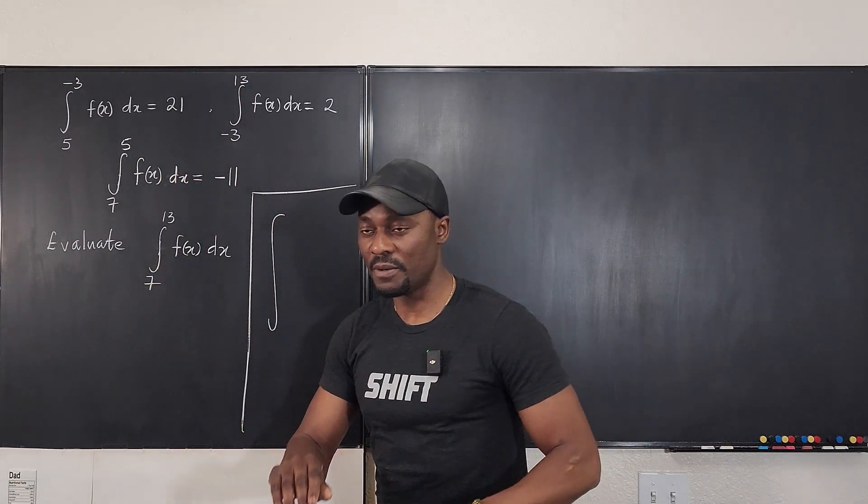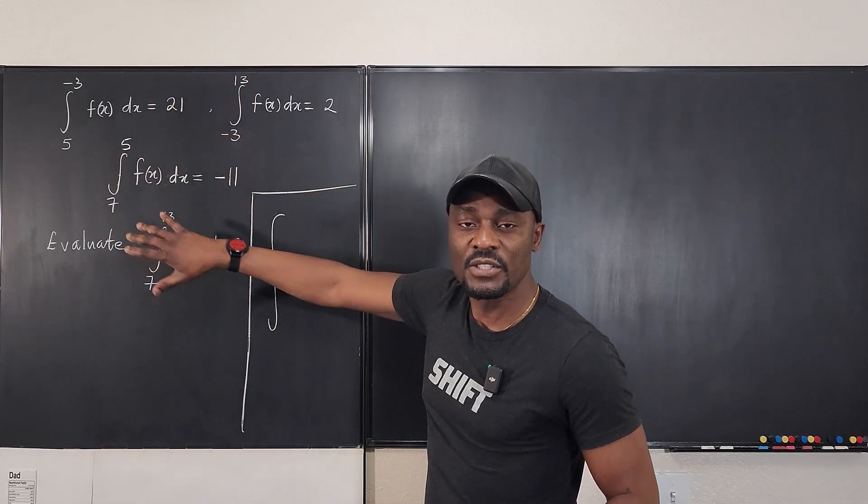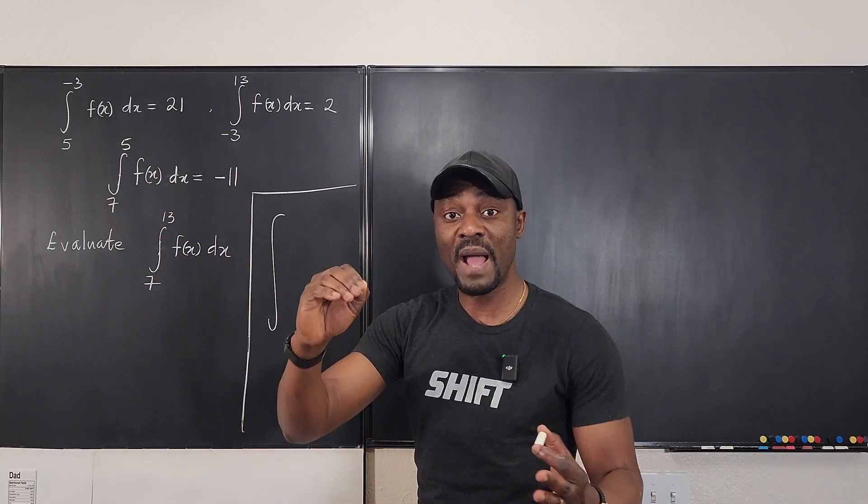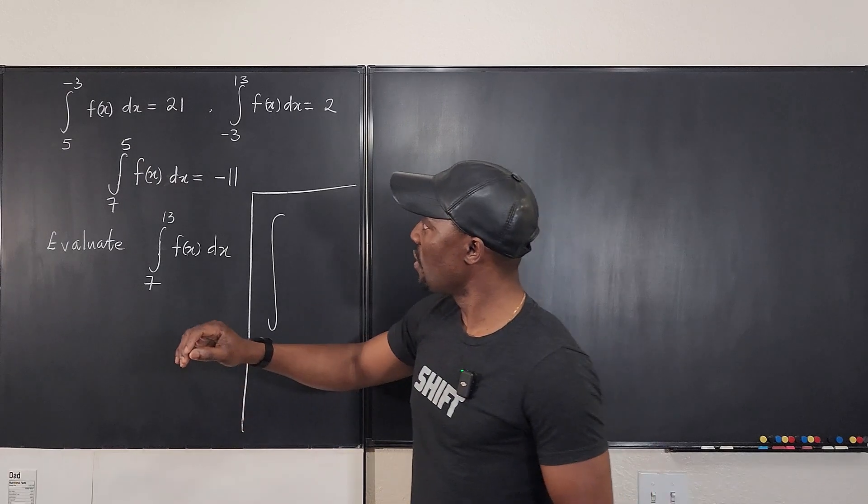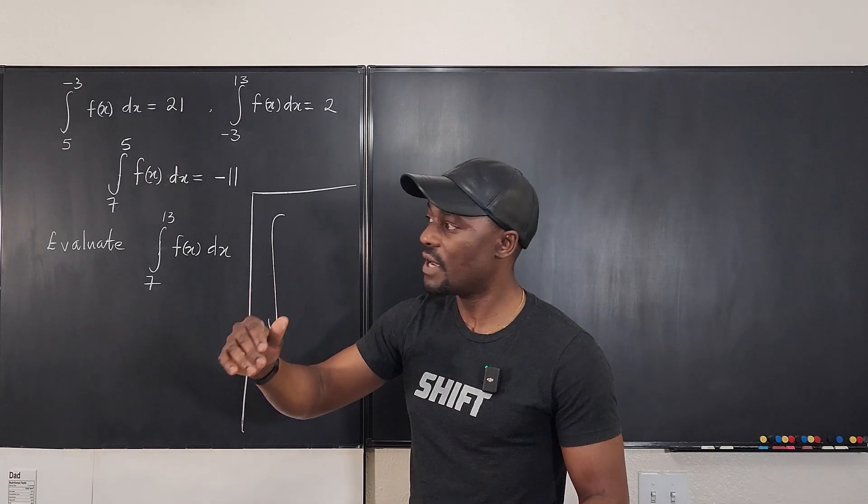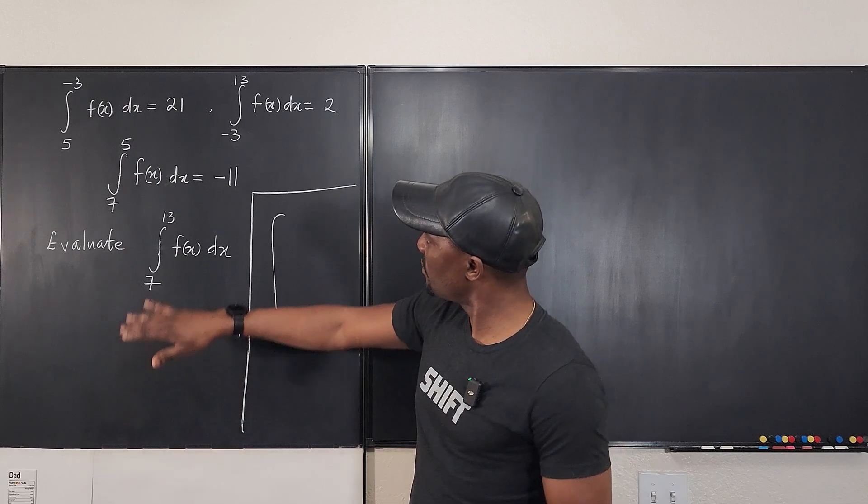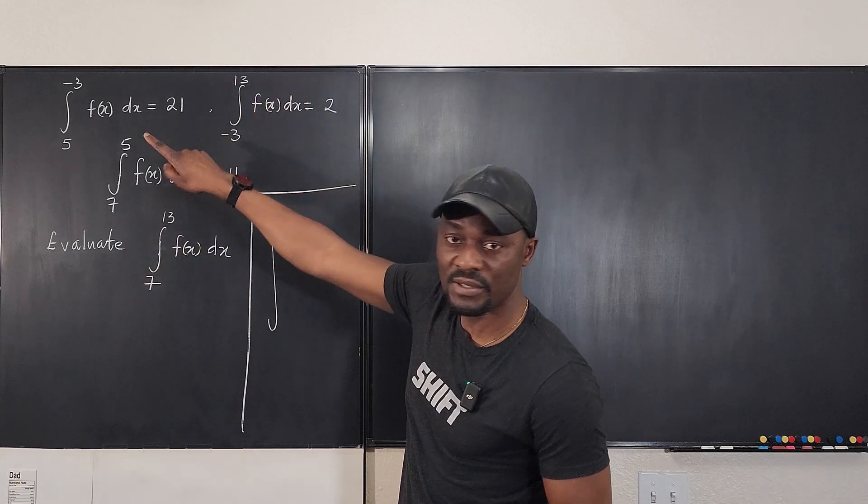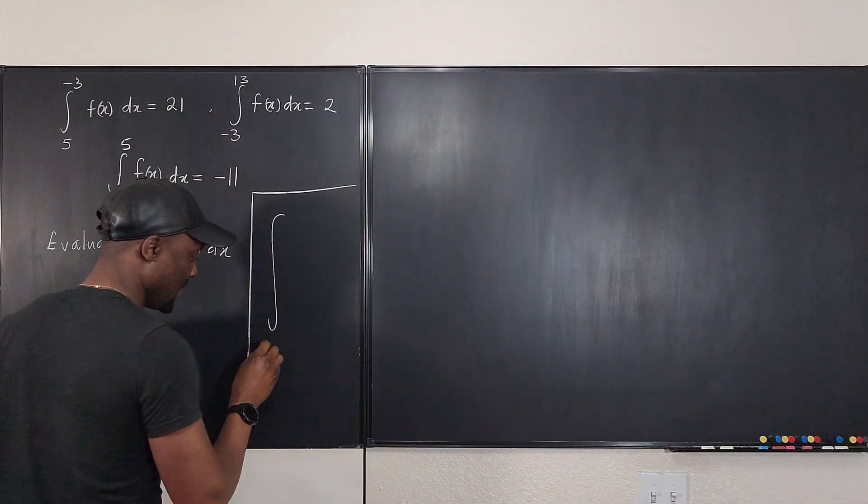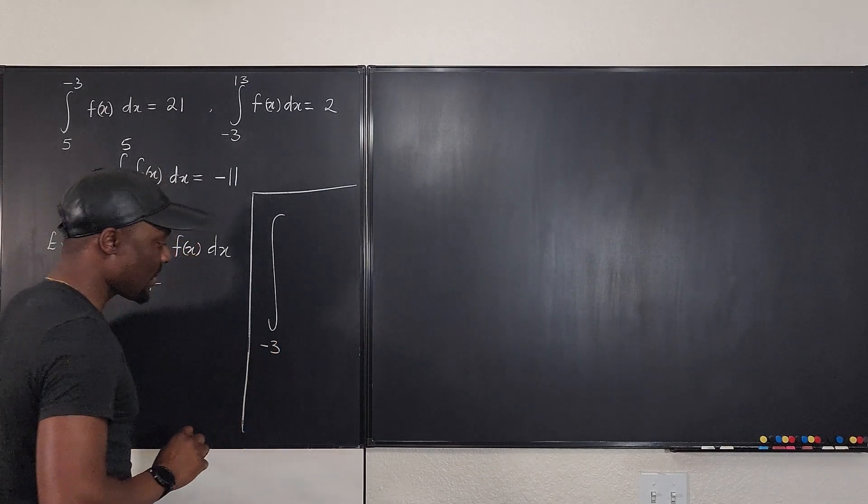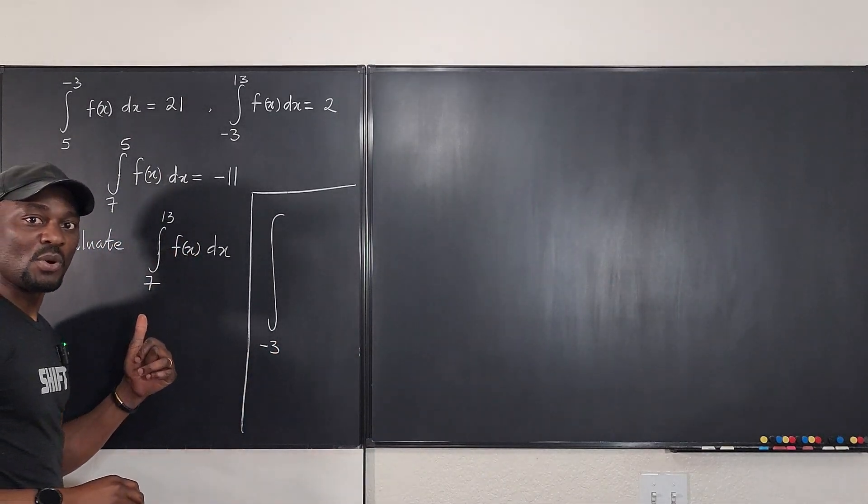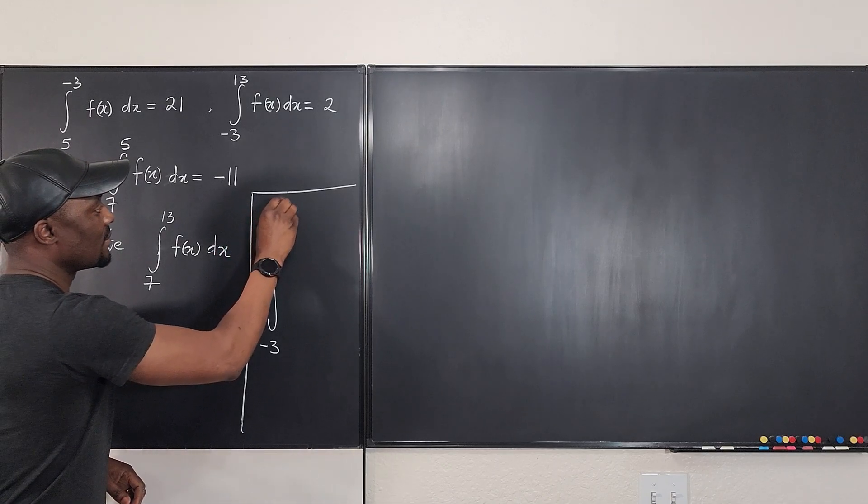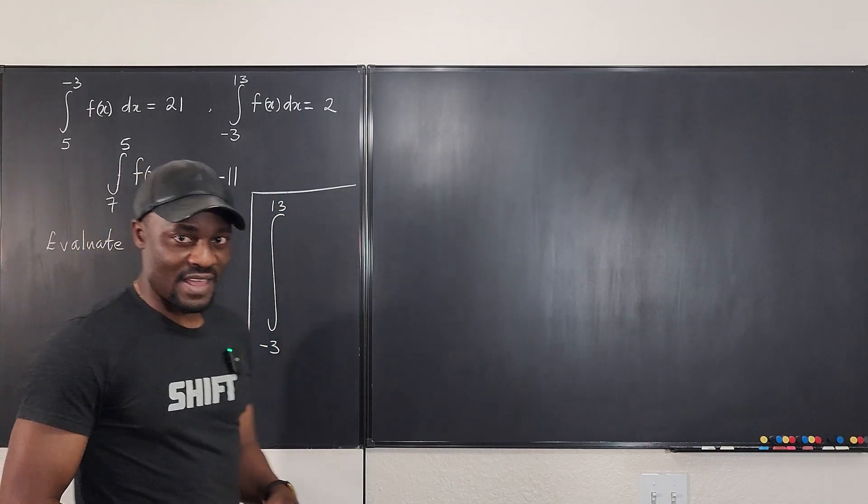So this is what you do. Look at everything given to you and pick out the smallest value of boundaries, or the smallest boundary you can see, or the lowest point. The lowest point I can see here is negative 3, so I'm going to write negative 3 here. And then look for the highest point on the boundaries. You're going to get 13.